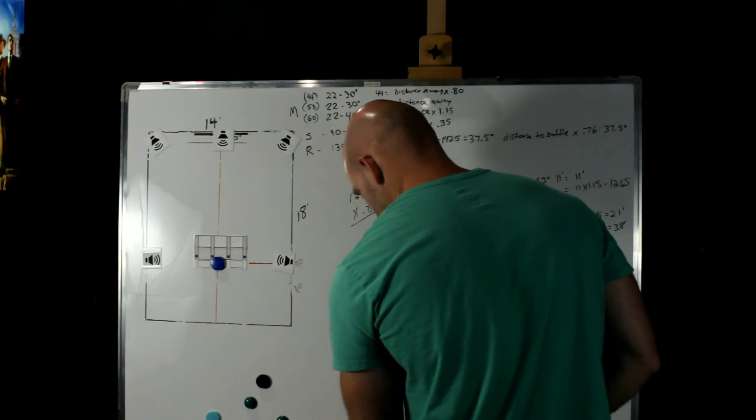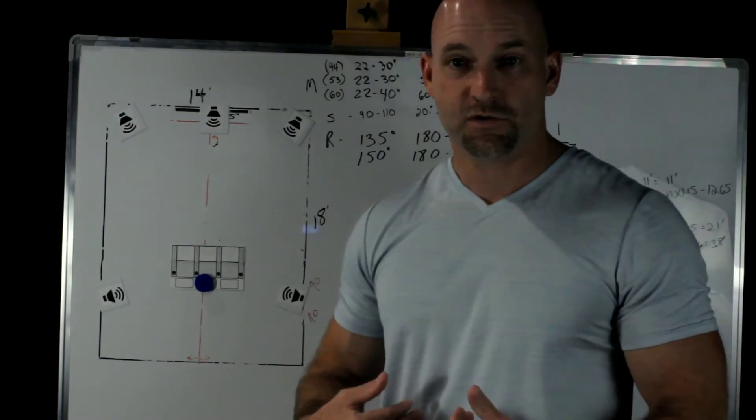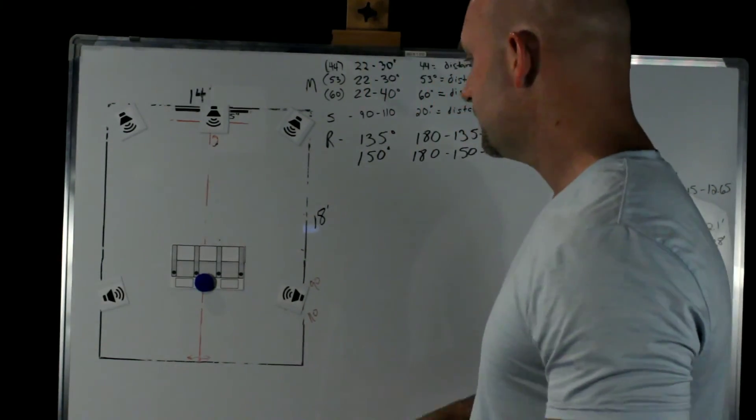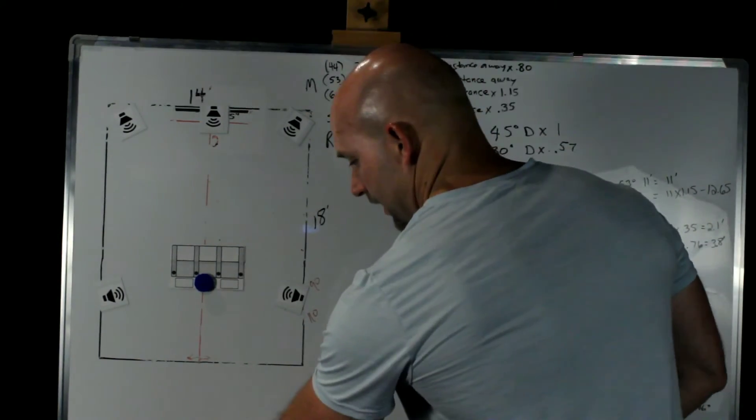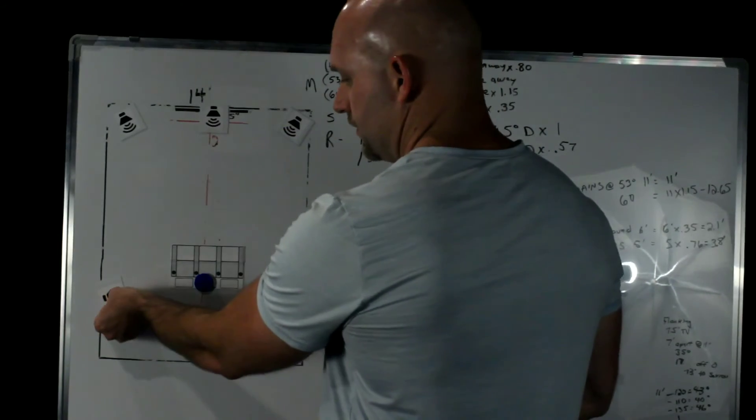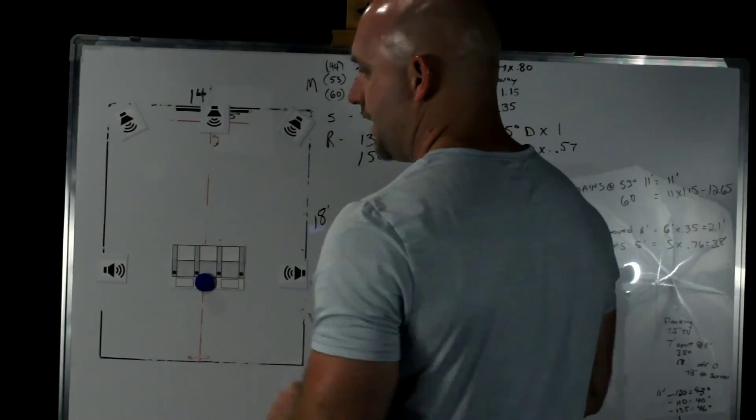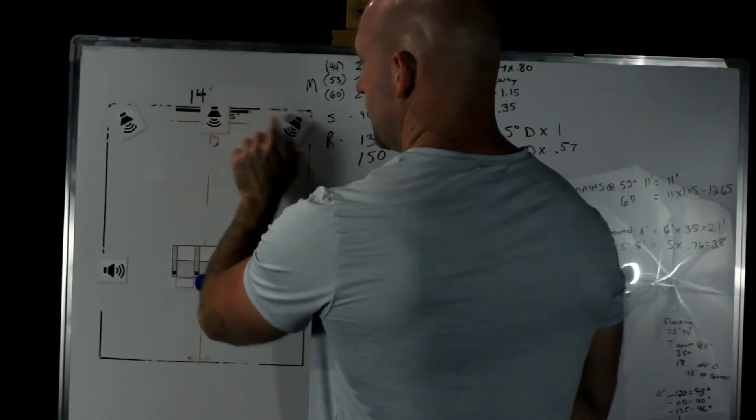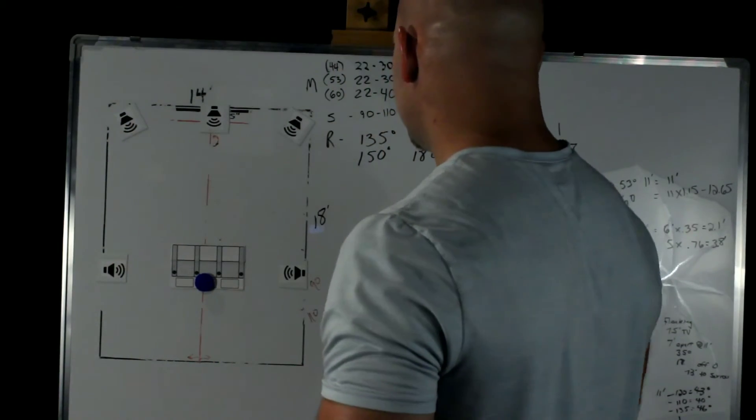But now we're going to go to a 7.1. I screwed up during editing. That's why I've got a new shirt on. I'm having to redo the section on rears. So, we just got our 5.1 and now we're going to add the rears. Now, when we do that, we're going to bring our surrounds back up to 90, which closes this gap back up to 60, which is where we want to be because remember, these are 60 degrees apart. Now this is 60 degrees apart.